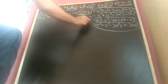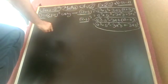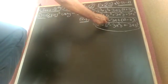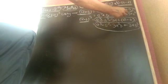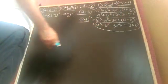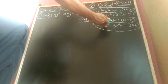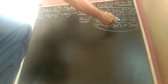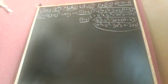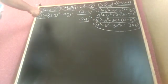The second identity is A minus B whole cube, which equals A cube minus B cube minus 3AB into A plus B. After expanding the multiplication, we get A cube minus B cube minus 3A squared B plus 3AB squared. Using these two identities, we solve question number 6.